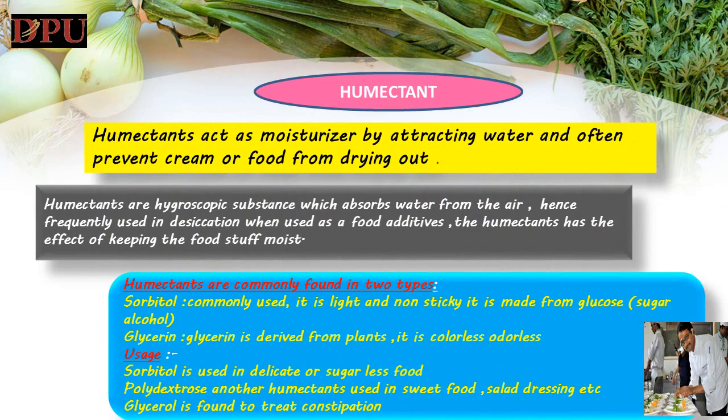Humectants act as moisturizers by attracting water. They often prevent creams from drying out. Humectants stabilize foods through moisture control. They are hygroscopic substances which absorb water from the air, hence frequently used to avoid desiccation. When used as food additives, the humectant has the effect of keeping the foodstuff moist. It is colorless, odorless, light and non-sticky. Sugar and salt are the oldest and most widely used humectants.